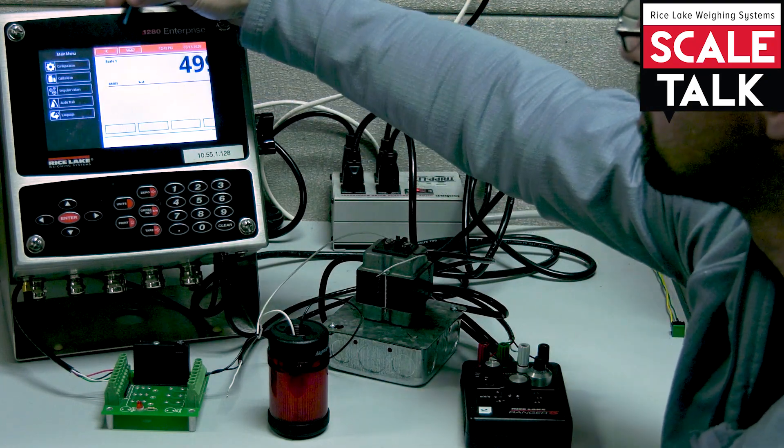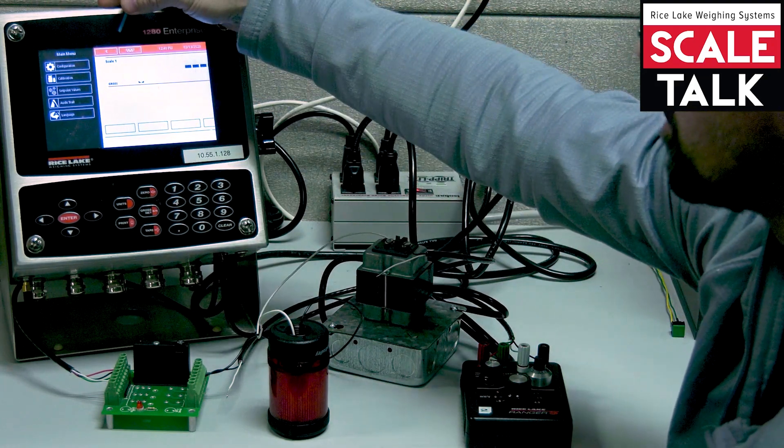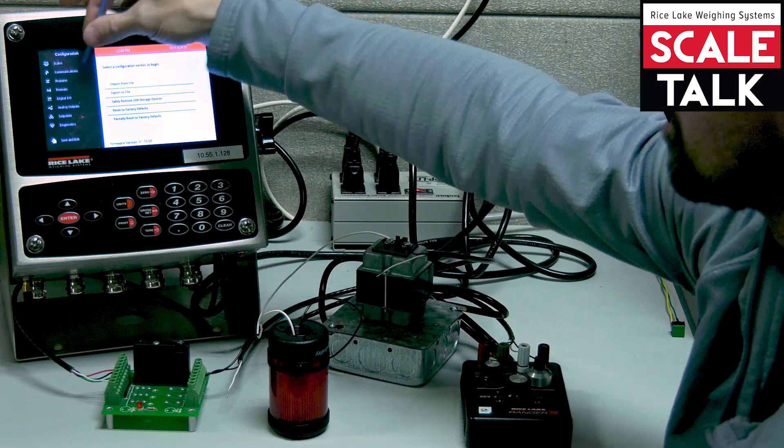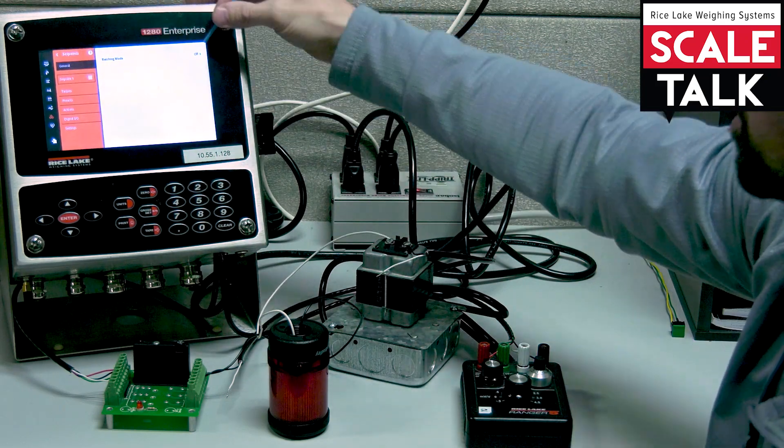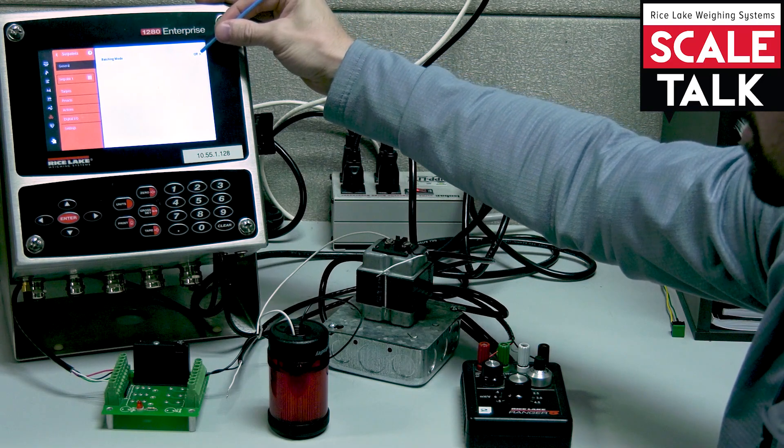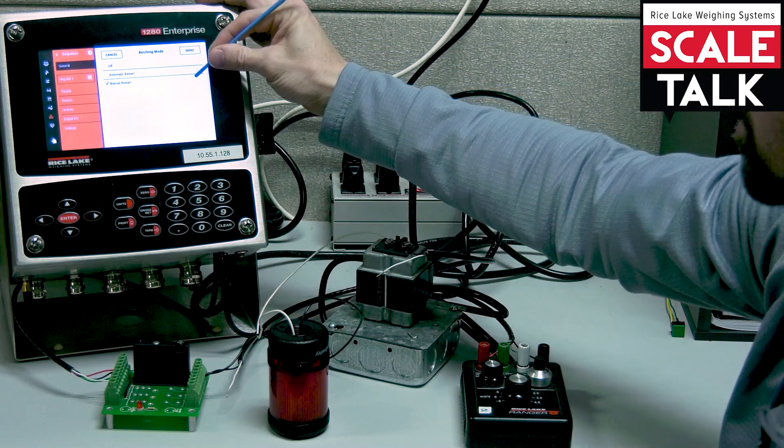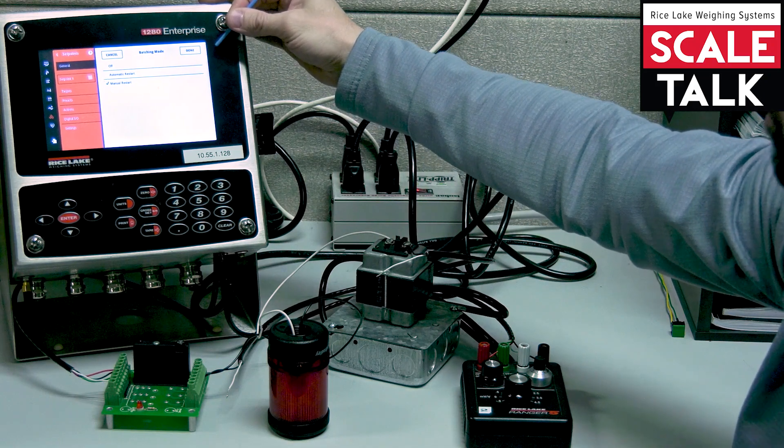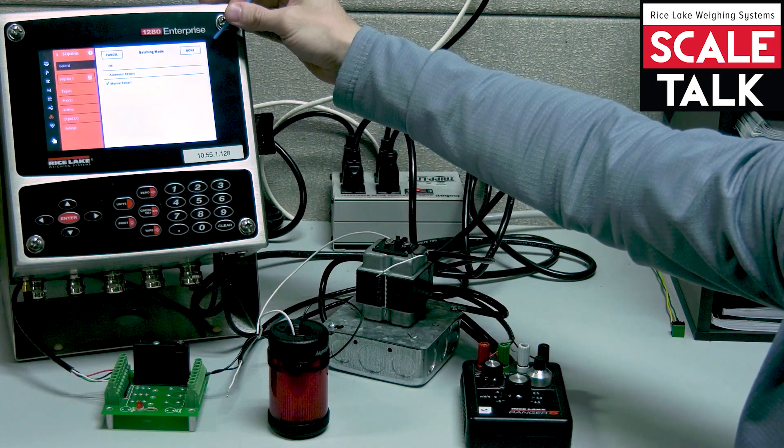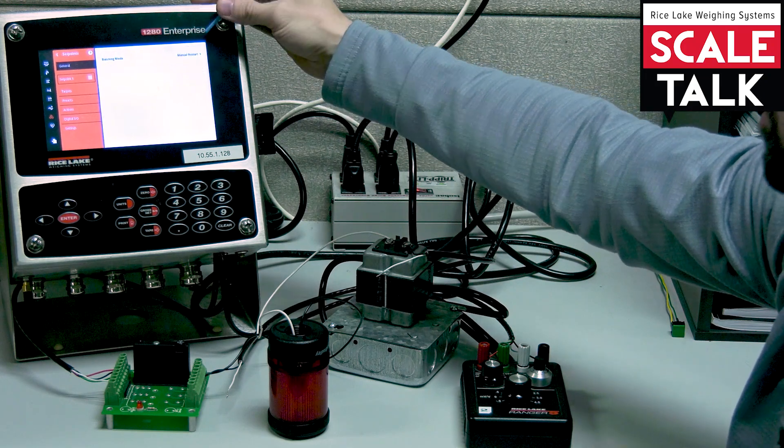Hop back in the menu. Go into config. We'll come down to our set point menu. We're going to go ahead and turn our batching mode on. We'll set it for manual restart. And that just means that somebody has to tell it when to go each time a routine is run. Select done there.